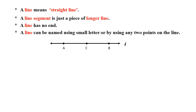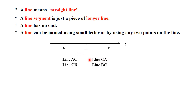Consider any third point on that line. If we want to name this line, we can write it using any two points. For example: line AC, or line CA, or line CB, or line BC, or line AB, or line BA. Also, we can write it using a small letter as line L.